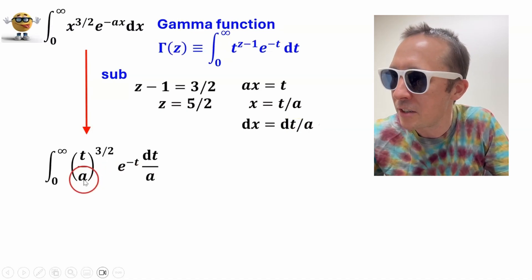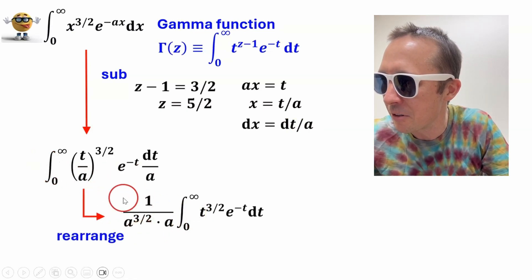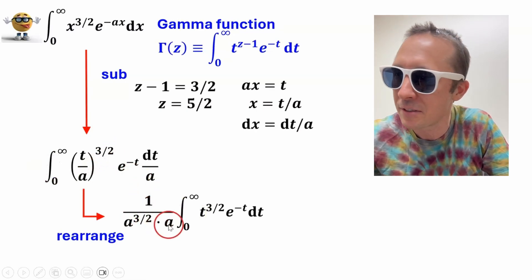and we're almost there, we're going to pull out the a's, because the a's are constant, and we yank them out of the integral, so the a to the three half comes out, the a comes out, and we're left with this integral right here,